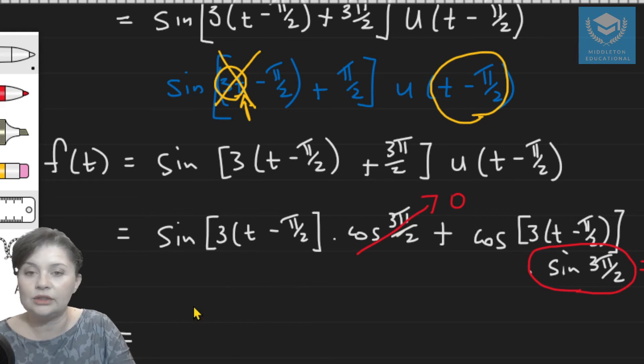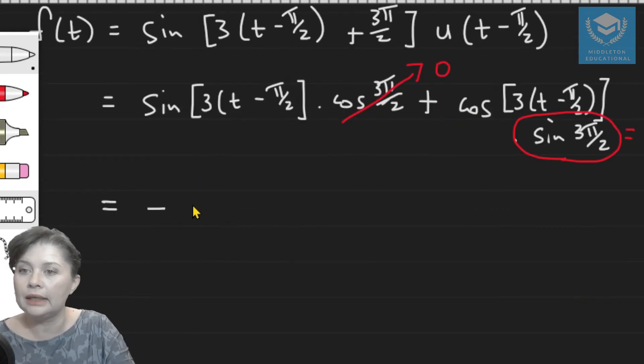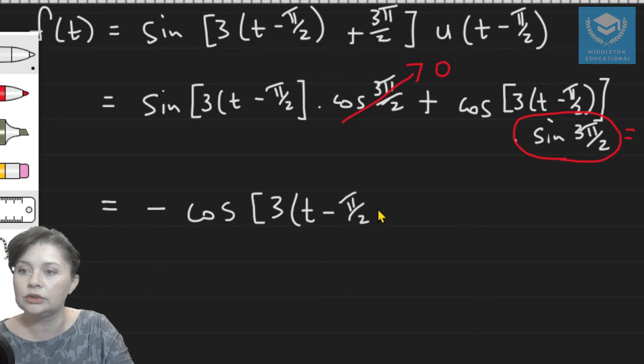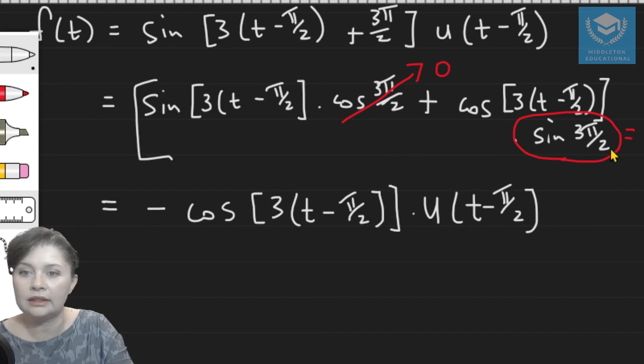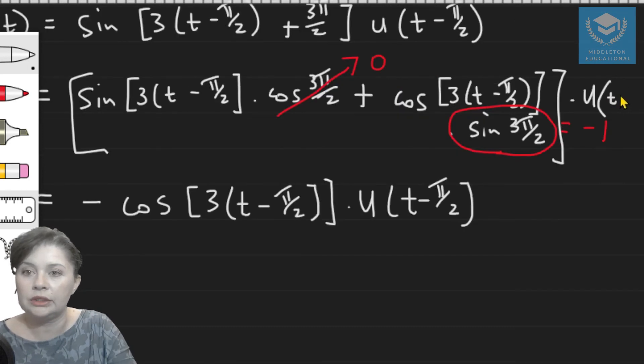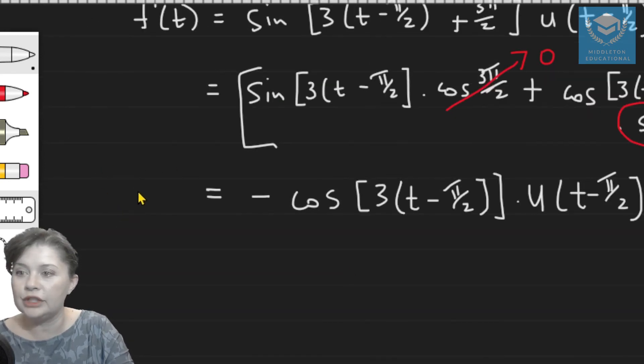That means your f(t) is going to be minus cos 3(t minus pi over 2) times u of (t minus pi over 2). And of course, this entire thing, we remember, has to be multiplied by the Heaviside step function. So that is going to be t minus pi over 2. So that is f(t).